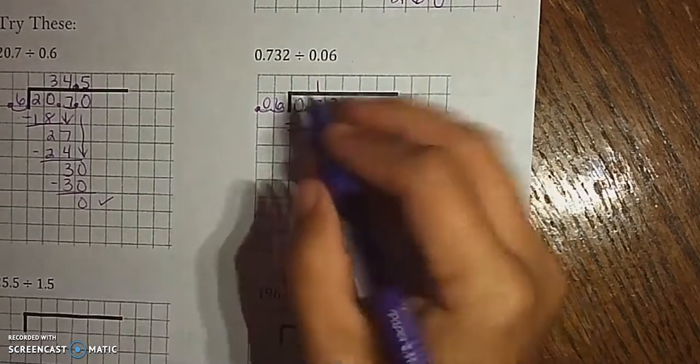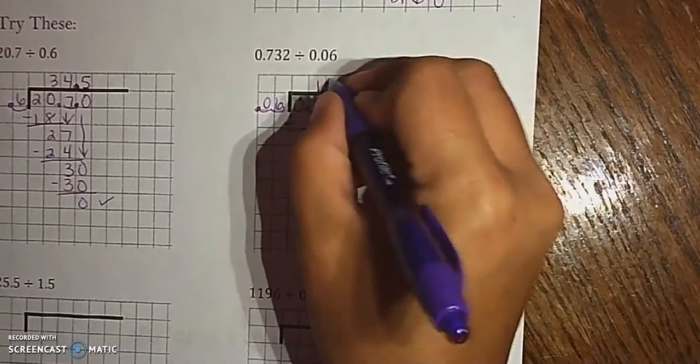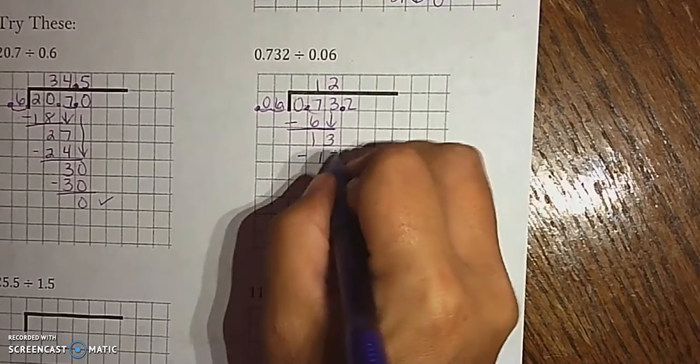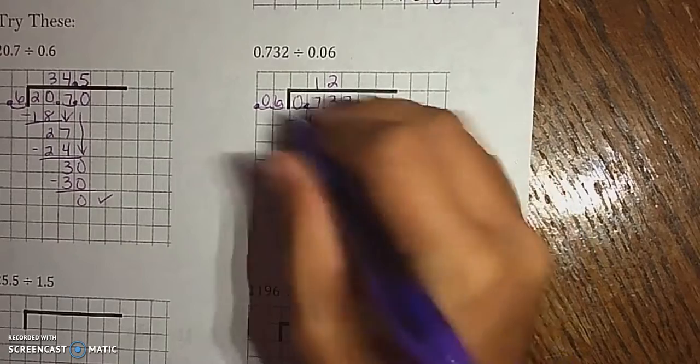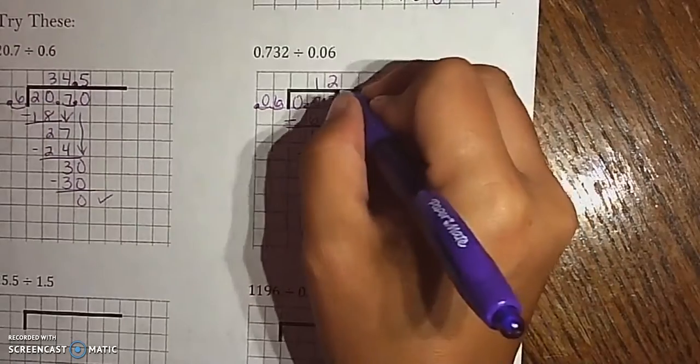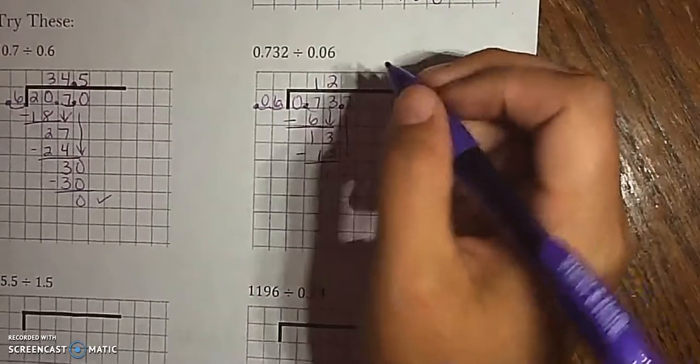Sorry, getting the puppy again. All right, 6 goes into 13 twice, which is 12. Bring down the 2. 6 goes into 12 twice.